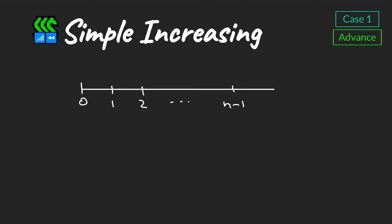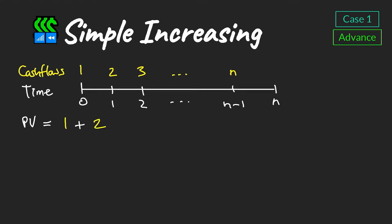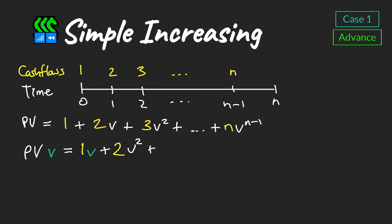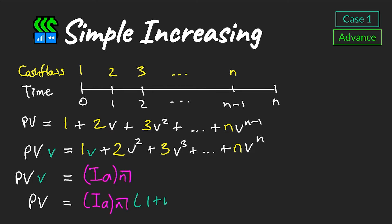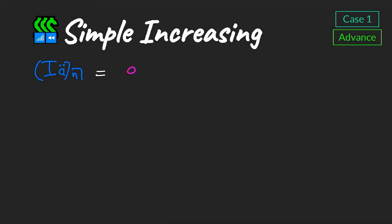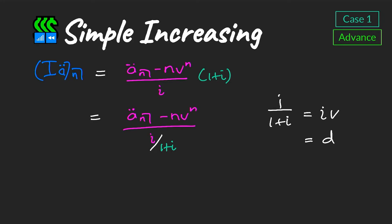Continuing with case one but now with cash flows paid in advance, we follow a very similar approach. After marking out cash flows on the timeline, we write out the present value by discounting each cash flow. We then multiply both sides by v to get line number two, at which point we can immediately recognize an increasing annuity paid in arrears on the right-hand side. Dividing both sides by v gives our new formula. Multiplying through by (1 + i) and using the relationship between i, v, and d gives the present value of a simple increasing annuity with cash flows paid in advance, shown in blue.